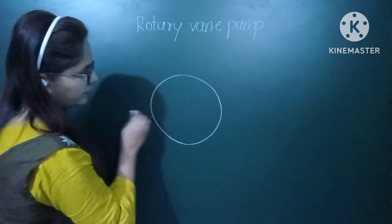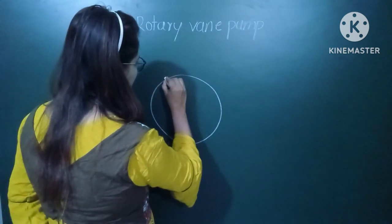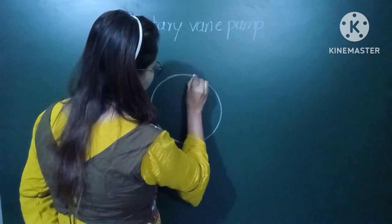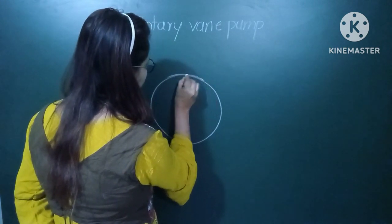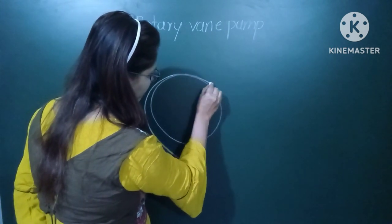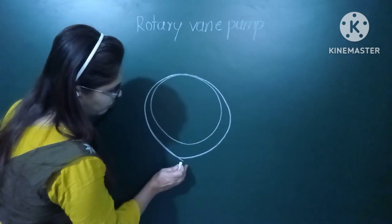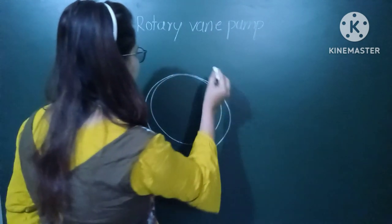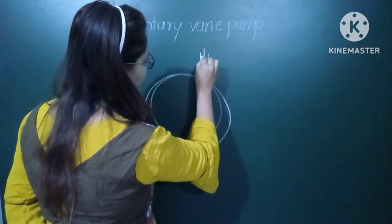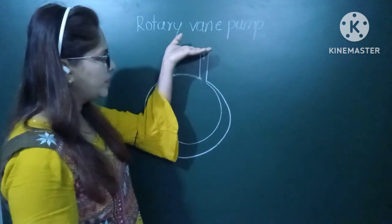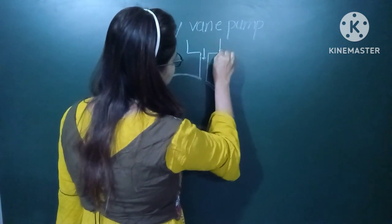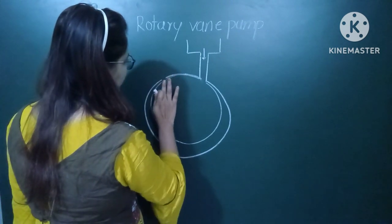The rotary vane pump will consist of a rotor, and there is some valve gap. Here is the inlet which is connected to the sample chamber — the chamber where you want to generate the vacuum. And here is the outlet.